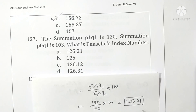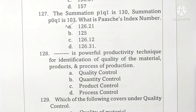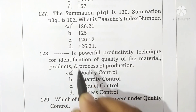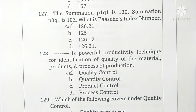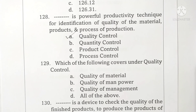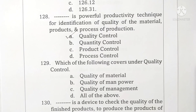Question 128: quality control is a powerful productivity technique for identification of quality of material, products, and process of production. Option A is correct. Question 129: which of the following covers under quality control? Options: quality of material, quality of manpower, quality of management, and all of these.